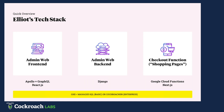A quick look at our tech stack: we essentially have three repos and apps. Our admin web runs GraphQL on Apollo and React. Our admin web backend runs on Django. The shopping pages are essentially a checkout function using cloud functions on GCP, and we use Nexus to generate those pages server side. All of our tech runs on GCP, specifically GKE, with managed SQL on basic, and then we use CockroachDB for the brands that have global distribution.